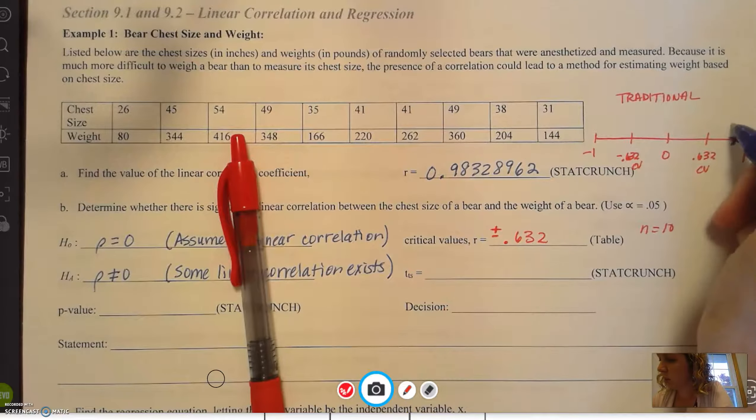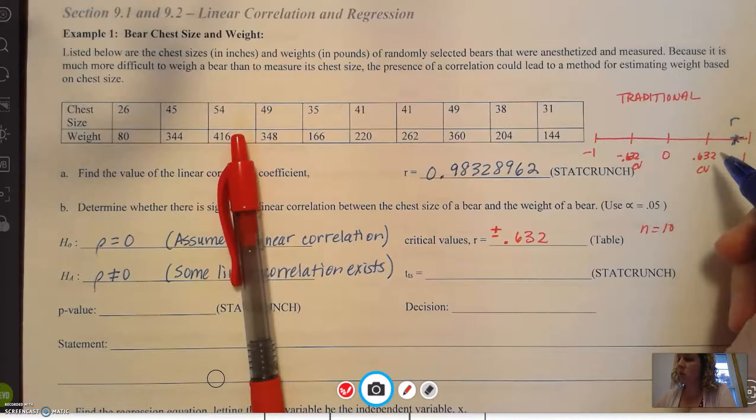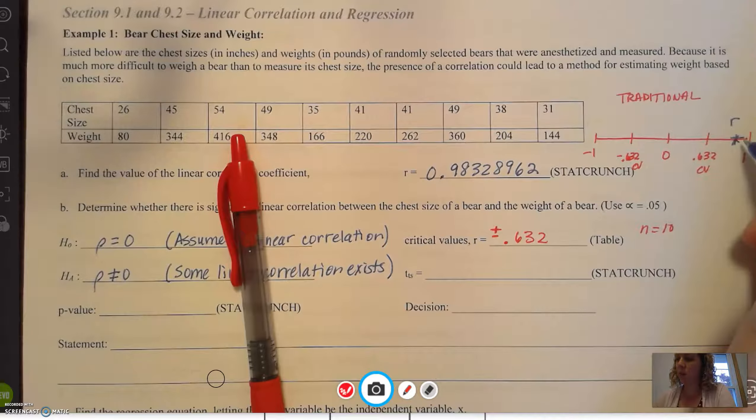Remember, according to our scale, this signifies there's going to be positive linear correlation, positive linear correlation.